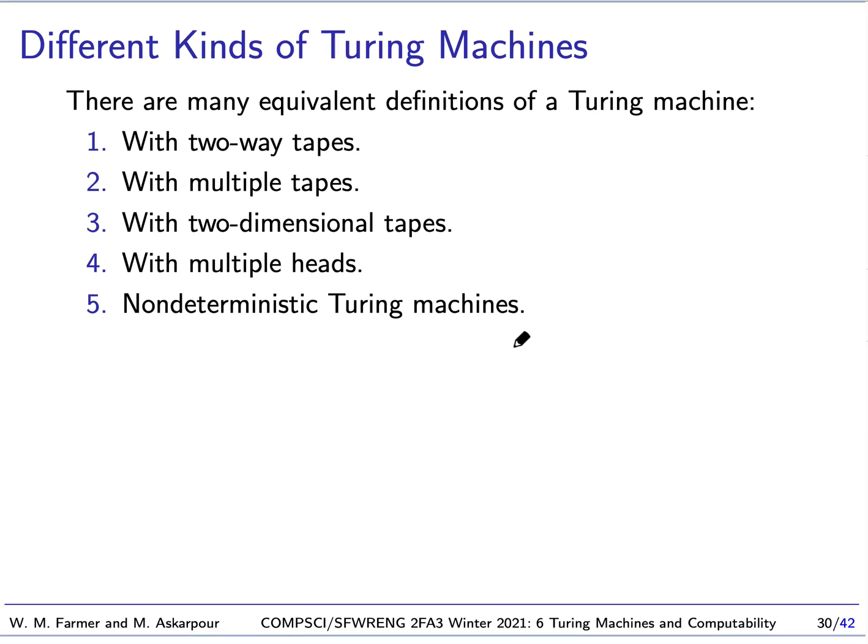Now, there are many different versions of Turing machines that are all equivalent. They all accept the same languages. They all compute the same functions and so forth. But some are more convenient than others. In our definition of a Turing machine, our tape always starts with this left end marker symbol, but it's infinite this way. We could have a tape that's infinite both ways.